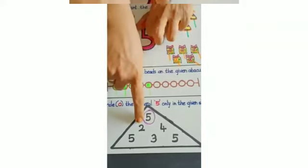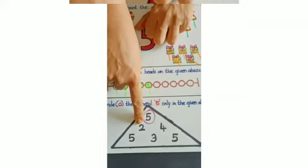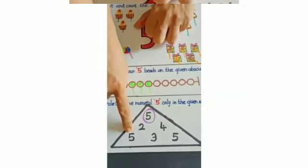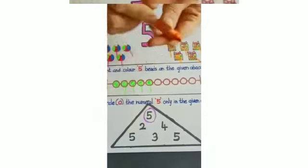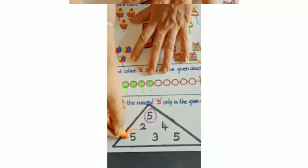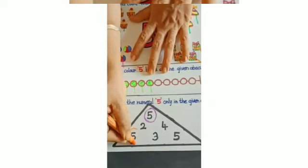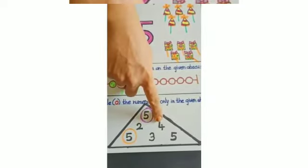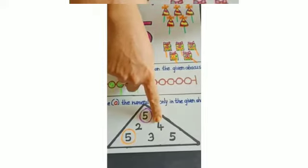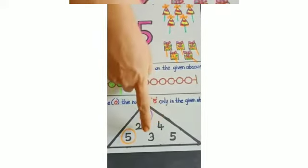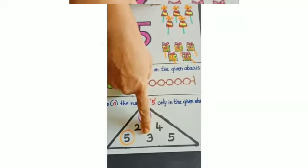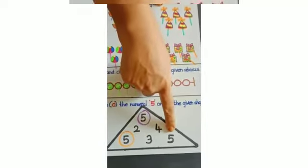Now next. Is this number 5? No, so we will not circle. Is this number 5? Yes, so again you have to change the color and encircle on number 5. And do it nicely. Now next children. This is number 4, so we will not circle on number 4. Okay, which number is this? Yes, number 3. So again we will not circle.